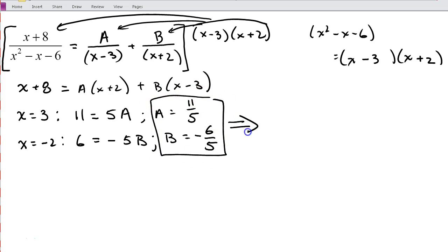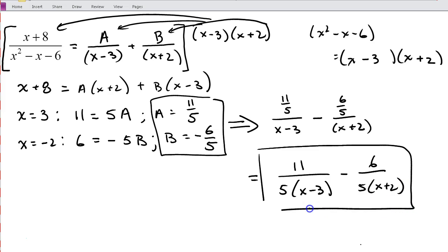So now that I have these values for a and b, I'm going to go ahead and substitute them back in to my partial fractions here. So a is 11 fifths, so it's 11 fifths over x minus 3 plus, well, we'll just make it minus since it's negative here, minus 6 fifths x plus 2. And we'll just simplify a little bit. We'll make our final answer 11 over 5 times x minus 3 minus 6 over 5 times x plus 2. So this would be our partial fraction decomposition.